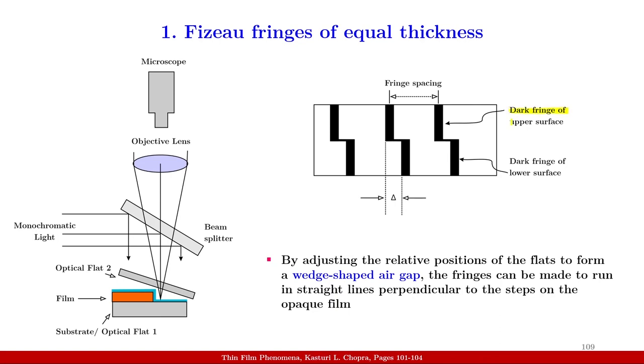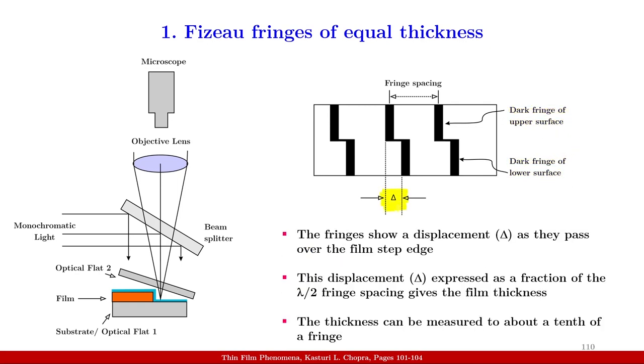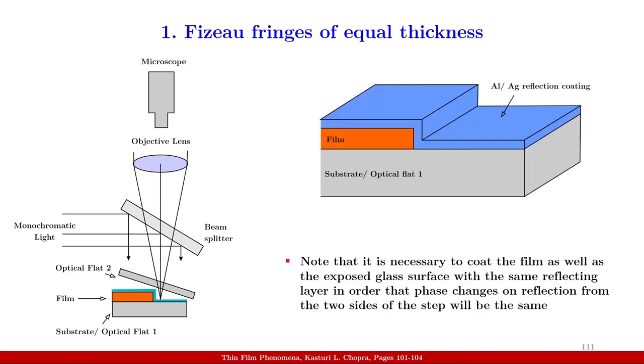In this figure, these dark fringes correspond to the upper surface which consists of the film and the substrate. And this part of the fringe correspond to the lower surface which consists only of the substrate. The fringes show a displacement delta as they pass over the film step edge. And this displacement delta expressed as a fraction of the lambda by 2 fringe spacing gives the film thickness. The thickness can be measured to about a tenth of a fringe. Note that it is necessary to coat the film as well as the exposed glass surface with the same reflecting layer in order that phase changes on reflection from the two sides of the step will be the same.